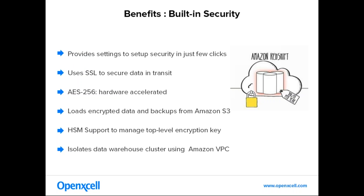Everybody is concerned about data security, but no need to worry. Amazon Redshift provides built-in security and settings to set up in just a few clicks. You can use SSL to secure your data in transit and deploy your cluster into a VPC — both are already inbuilt in AWS. Data can be encrypted by the hardware accelerator AES-256, and to manage encryption keys, a Hardware Security Module (HSM) service is available.